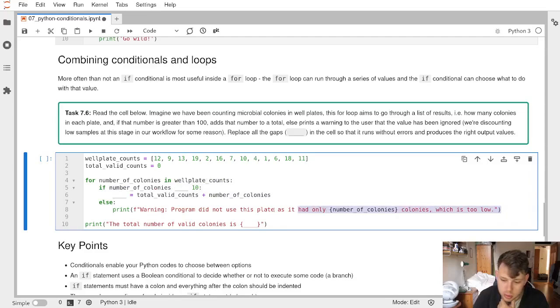Then we hit our conditional. If the number of colonies is greater than 10, then we would like to add to the total valid counts the number of colonies. So the new total valid counts is the old one plus the number of colonies.